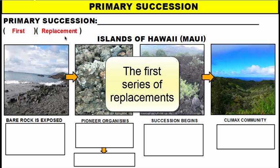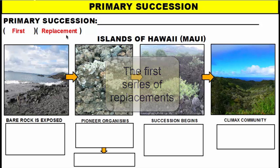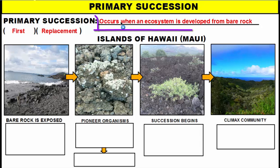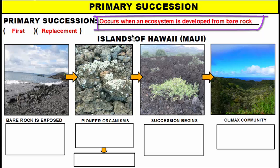So primary succession is the first series of replacements that will happen in an area. Primary succession occurs when an ecosystem is developed from bare rock, so it's starting out from nothing.